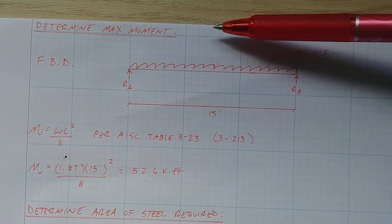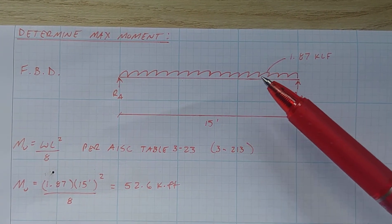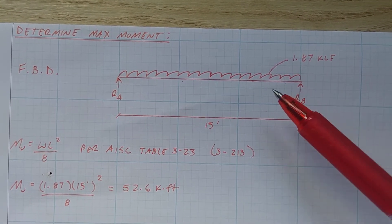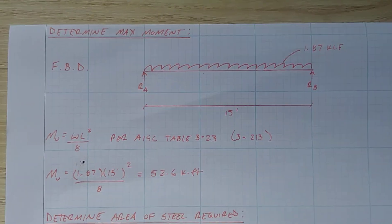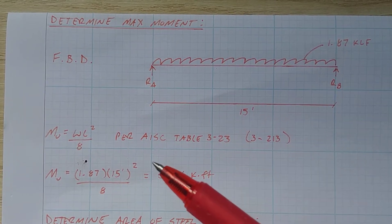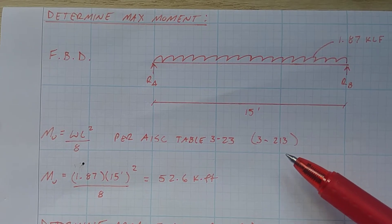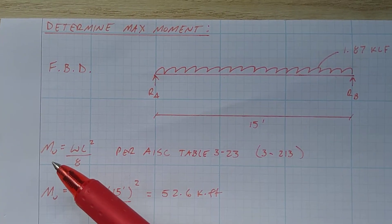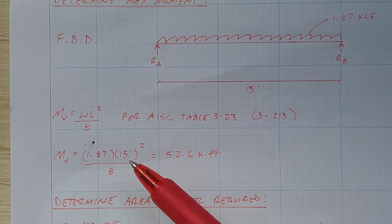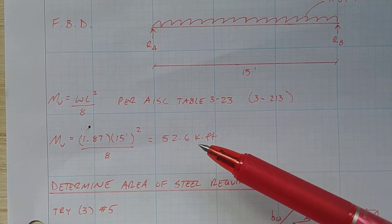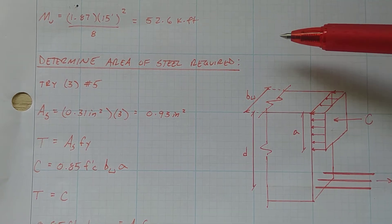Next we determine the maximum moment. For a simply supported beam 15 feet long with a distributed load of 1.87 klf, we can use the formula from AISC Table 3-23 (page 3-213): maximum moment = wL²/8. Plugging in 1.87 klf for w and 15 feet for L gives a maximum bending moment of 52.6 kip-feet. That was easy — it's all about knowing where to find the information to make your life easier.